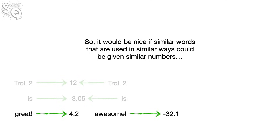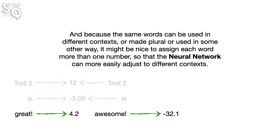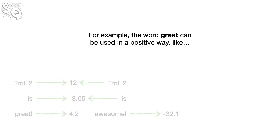So it would be nice if similar words that are used in similar ways could be given similar numbers, so that learning how to use one word will help learn how to use the other. And because the same words can be used in different contexts, or made plural, or used in other ways, it might be nice to assign each word more than one number.